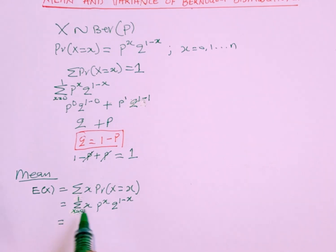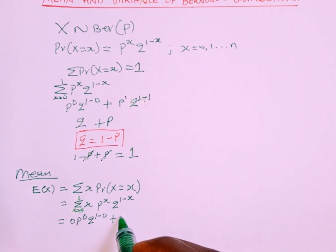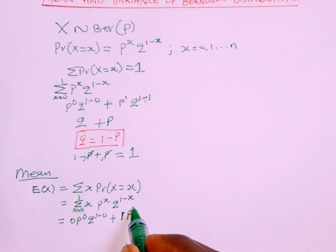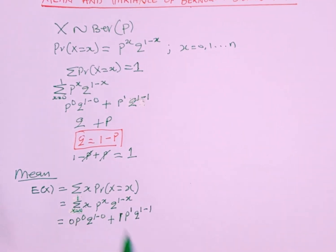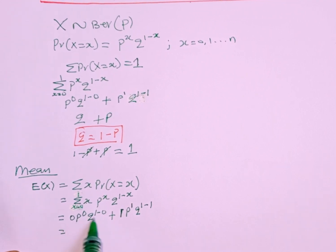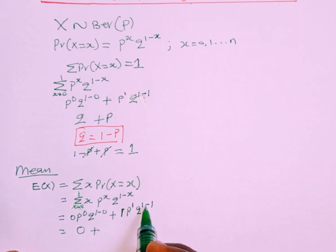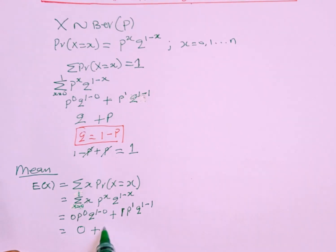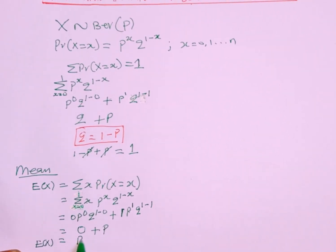At x equals 0: we get 0 times p^0 times q^(1−0). Since the factor is 0, the whole term is 0. At x equals 1: we get 1 times p^1 times q^(1−1). That gives 1 times p times q^0, and since q^0 equals 1, this simplifies to p. Therefore the expected value of X, which is the mean, equals 0 plus p, which is p. So the mean of Bernoulli is p.